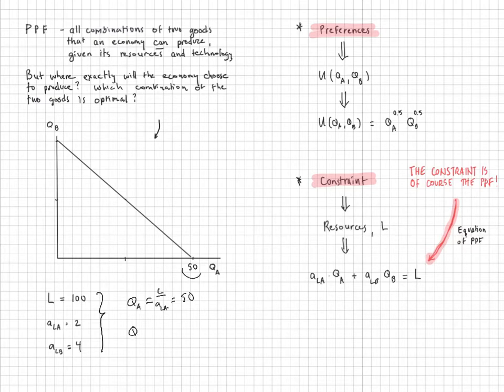And the maximum amount of good B that we can produce is 25. So we have our 25 unit intercept over there. And the question is, where on this PPF, the straight line between those two intercepts, will we be?